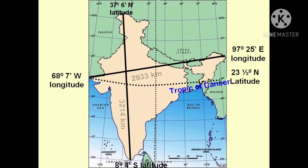The north-south extent of the mainland of India from Kashmir in the north to Kanyakumari in the south is about 3,214 km. The east-west extent from the Rann of Kutch in the west to Arunachal Pradesh in the east is about 2,933 km.